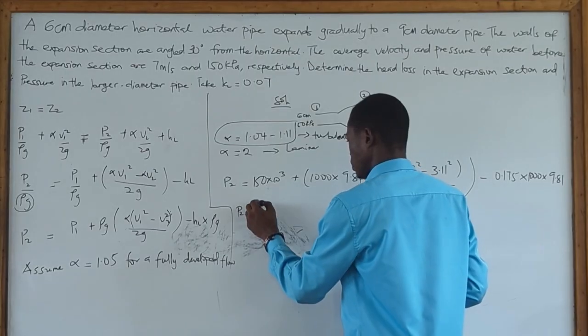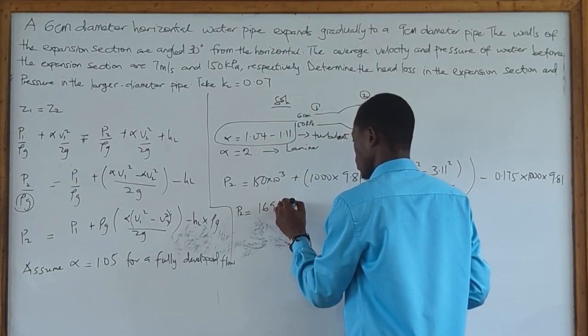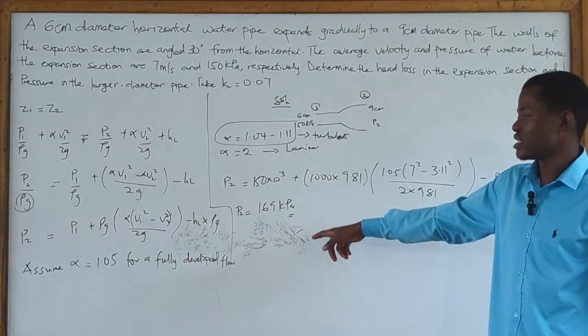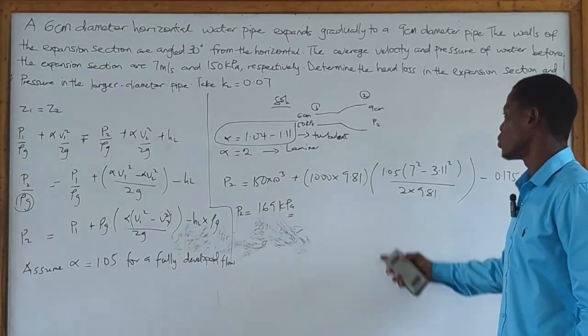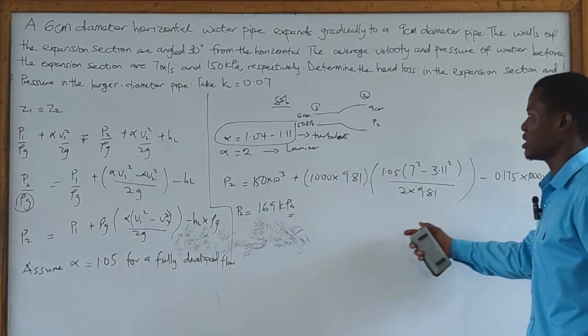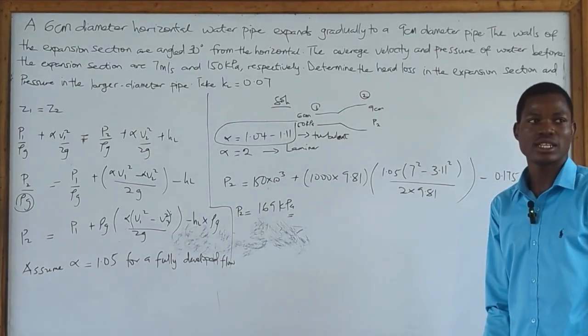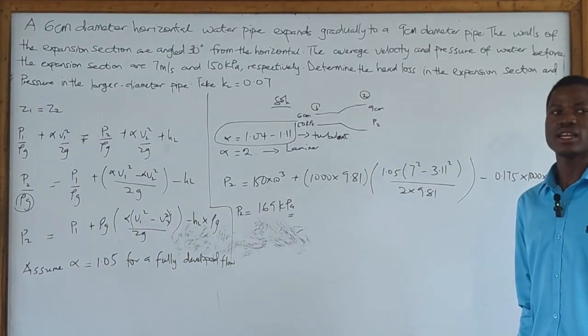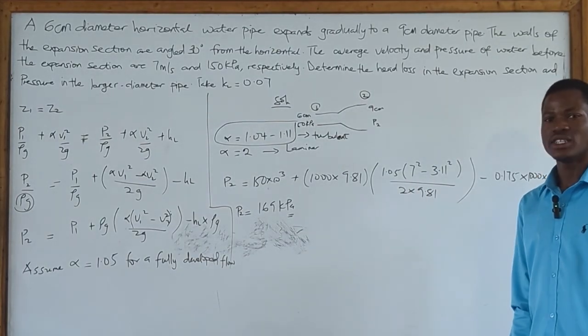After doing your computation, you are going to get your pressure to be around 169 kilopascal. That's the pressure at the larger diameter. Although there were losses, the losses were not that much. This is how we go about this question under flow in pipe. Hope you enjoy this video.